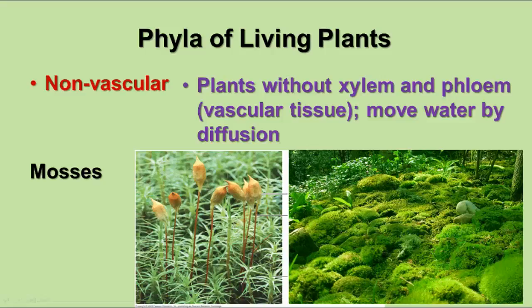Today we're going to talk about the types of plants. There are four main groups of plants that are still around today. The first group is called the non-vascular plants. These plants don't have any xylem or phloem and they depend on diffusion and osmosis to move materials from the ground to the rest of the plant.